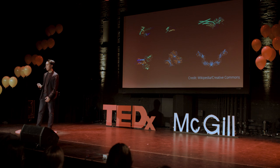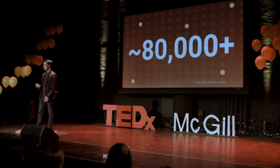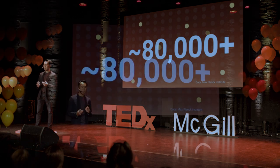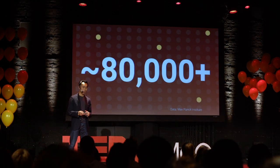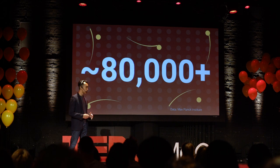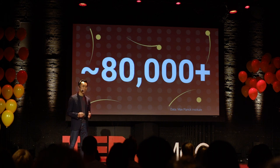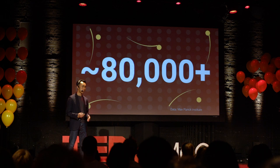At this very moment, there are over 80,000 different types of proteins in each and every one of our bodies, simultaneously communicating with each other, forming these very complex networks that sustain life as we know it. However, these networks are sadly vulnerable to failure. And when failure happens, it manifests itself as disease.